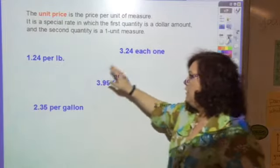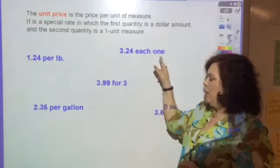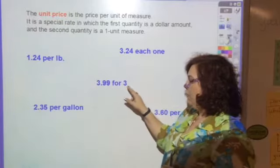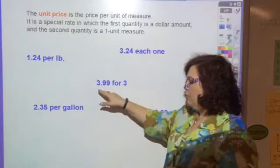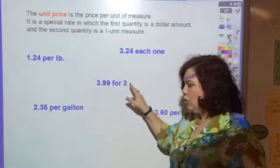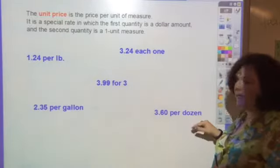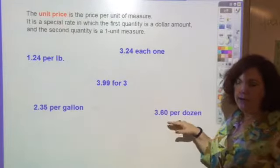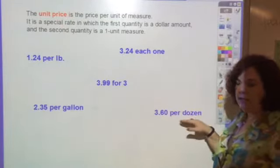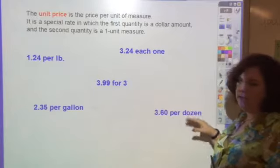So $1.24 per pound, $3.24 each one, $3.99 for three—that's divided by three—$1.33 for each, $2.35 per gallon, and then $3.60 per dozen. So if you divide that by 12, it'd be 30 cents each, or you could say per dozen is the amount.